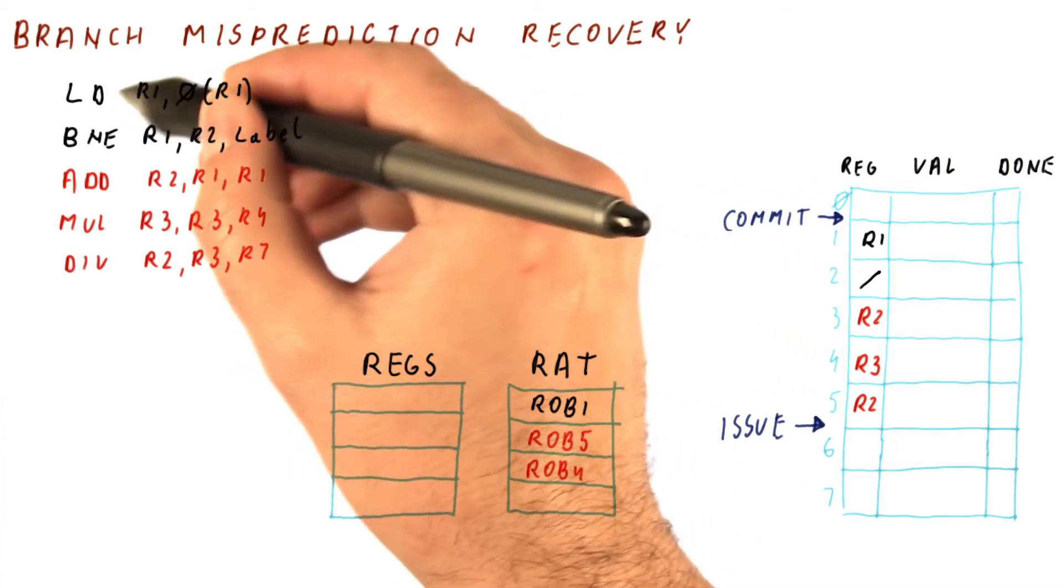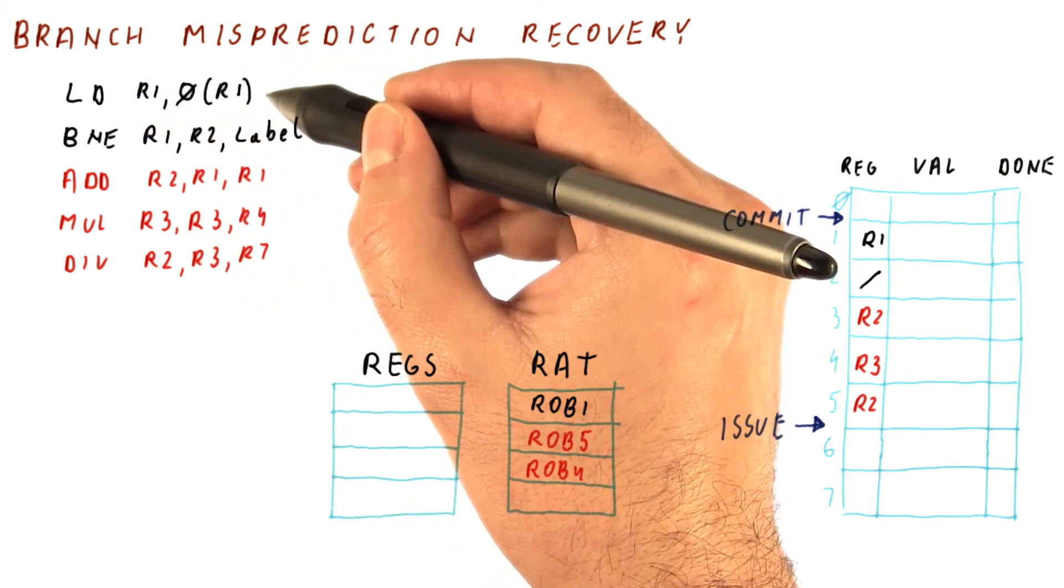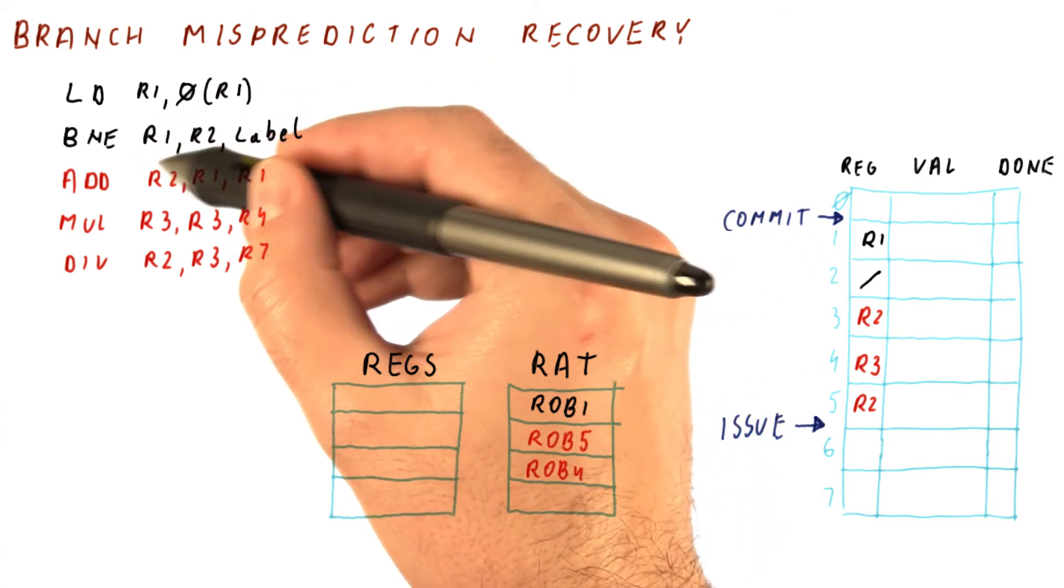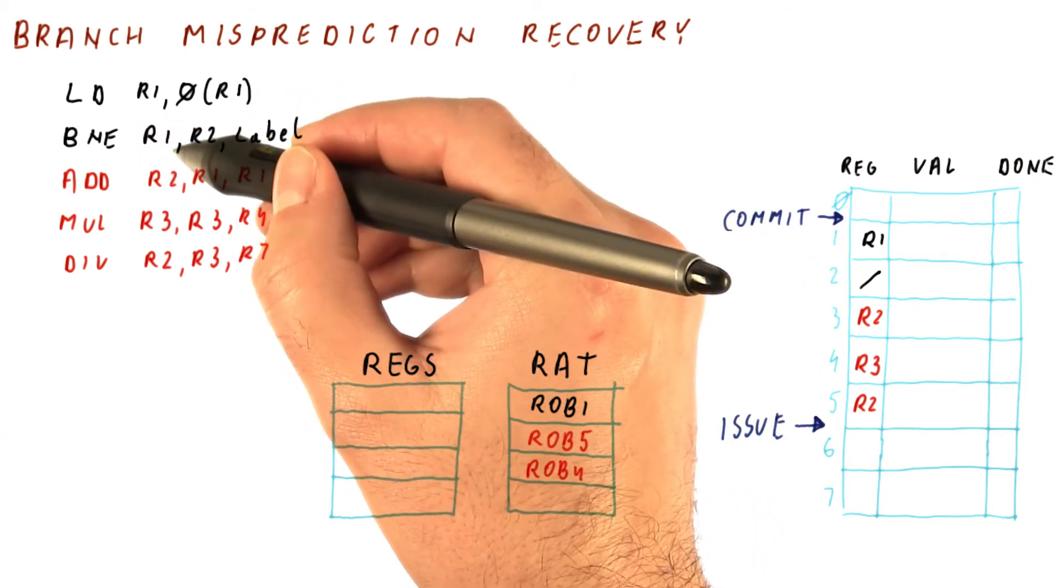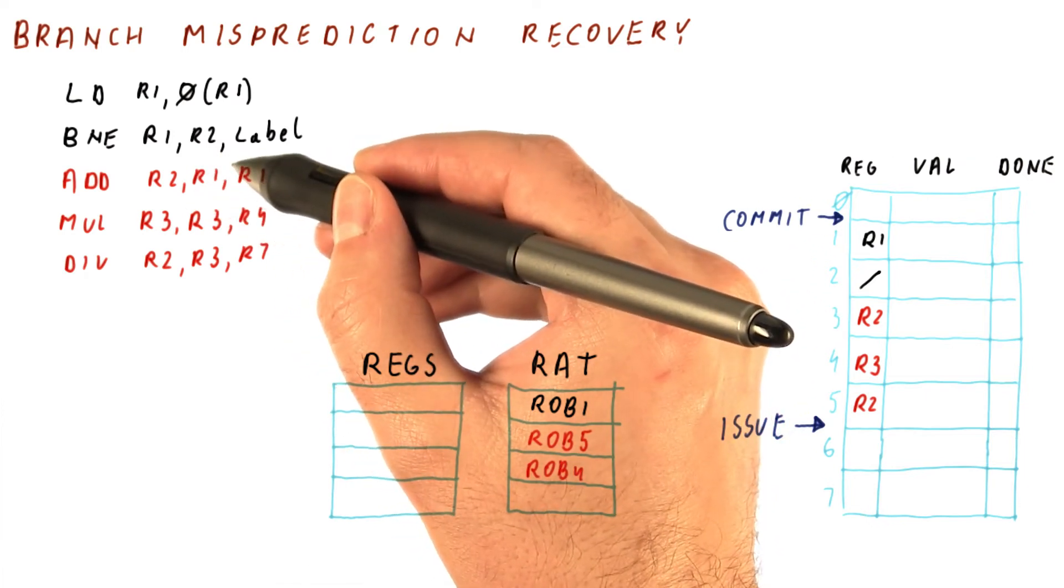Now suppose that this load takes a long time to produce a value, for example, because it's a cache miss. This branch depends on the load, so it cannot complete until the load is done. And this add also depends on the load, and it cannot complete until the load is done.